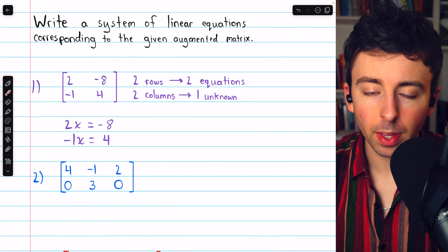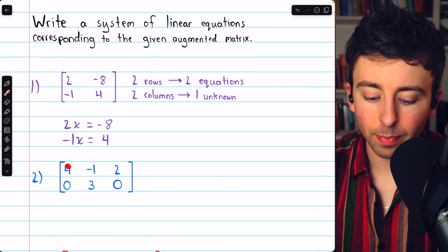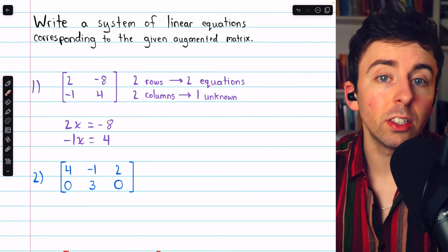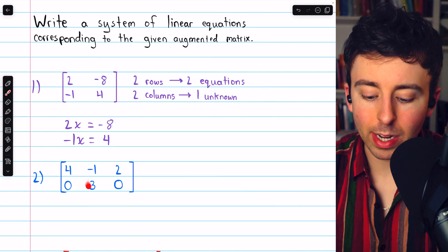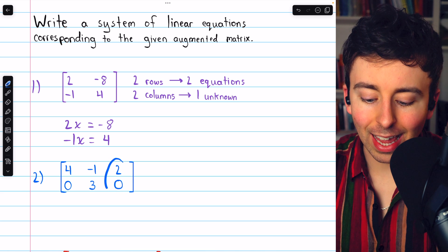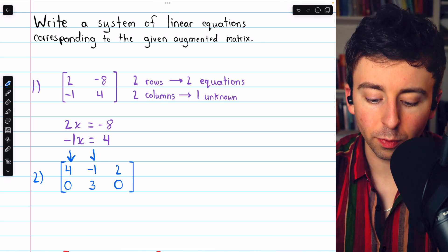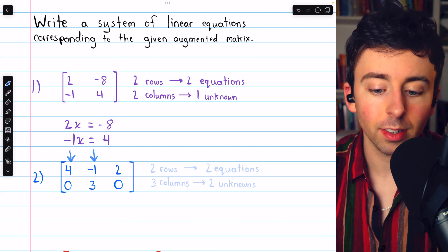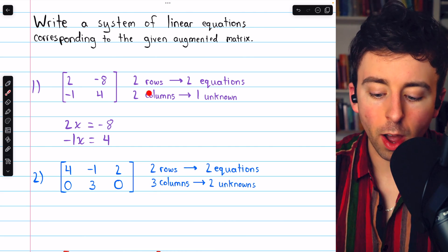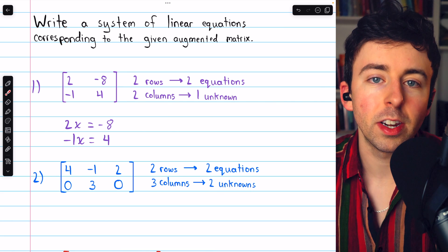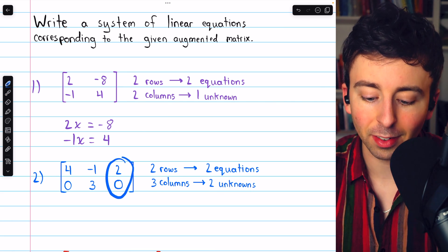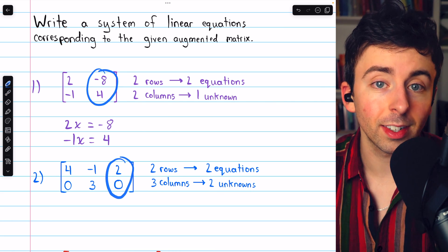Let's check out this second example. Again, consider the size. It is two rows, so we'll need two equations, by three columns. Again, the last column represents the constants, which leaves two columns for two unknowns. Notice how the total number of columns is one more than the number of unknowns. That's because the last column is reserved for constants.